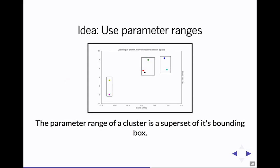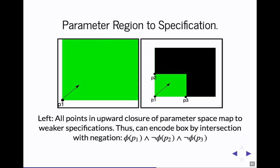Another thing that we'd like is to be able to generalize the clusters that we learn. The idea is that we take the projection and we use the parameter ranges to compute a bounding box that corresponds to a set of parameter ranges. Because of the upward close nature in the parameter space due to the monotonicity, if you have a single point P1 and then two points on the edge of the bounding box, you can use the syntactic expression phi of P1 and not phi of P2 and not phi of P3 to encode that bounding box as a single specification.